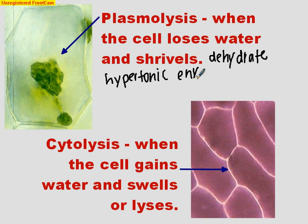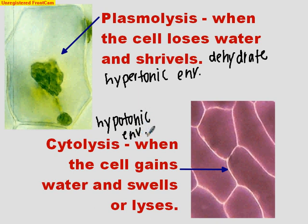The opposite is cytolysis — when the cell gains water and swells or gets bigger. It could eventually lyse, which means to burst. If it gains too much water, it could burst. Conditions that would cause cytolysis would be a hypotonic environment. If the outside is hypotonic, that means the inside of the cell must be described as hypertonic. We know water always moves towards the hypertonic, so water moves into the cell and it's getting bigger — it's swelling. We're going to spend the next couple of days looking at examples and scenarios.